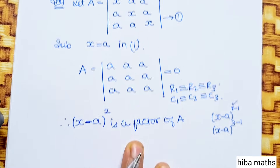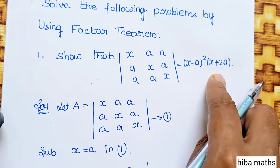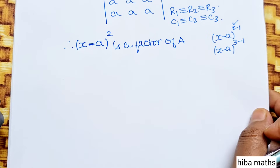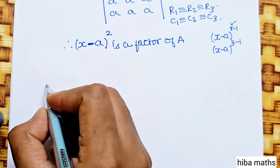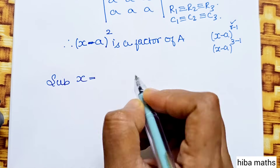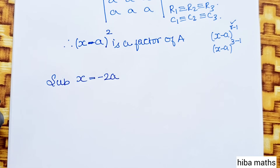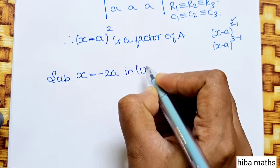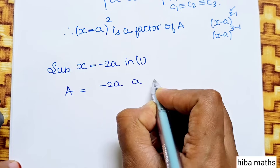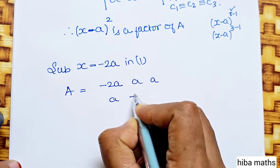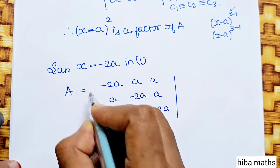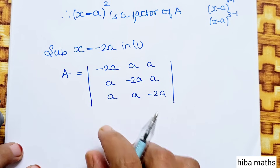So we also need (x plus 2a) as a factor. This is the hint. Next, substitute x equal to minus 2a. Then a becomes 3x minus 2a, and each entry in the matrix becomes (minus 2a), (a), (a) in the respective rows and columns. We apply the operation C1 plus C2 plus C3 to the first column.